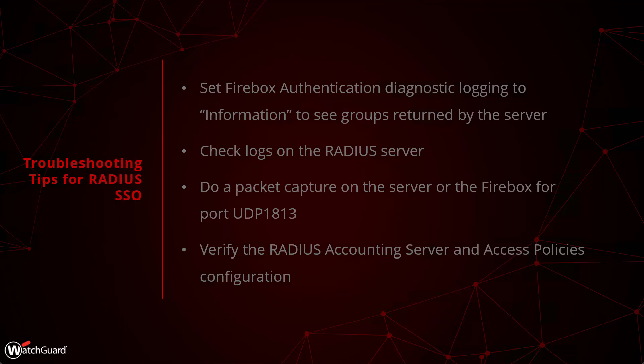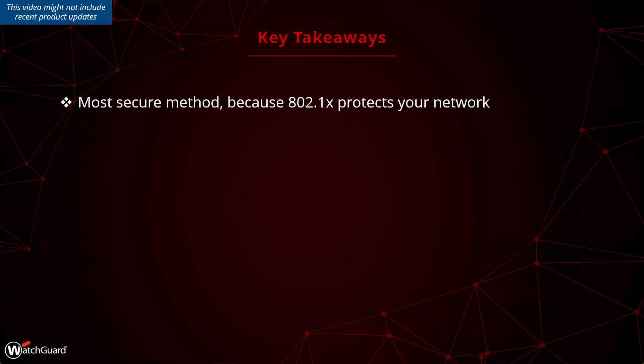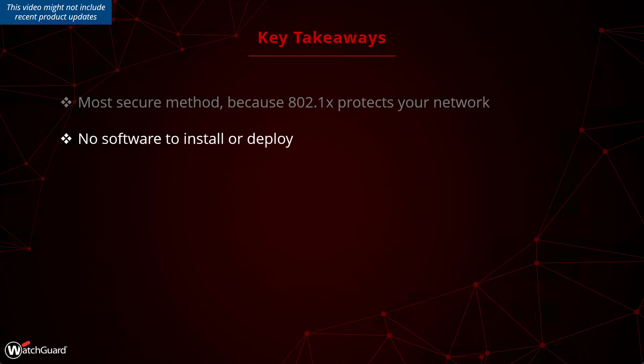Also verify that the access policies you configured have the correct constraints and conditions to allow people to connect. To wrap things up: RADIUS SSO is the most secure method of single sign-on because it uses 802.1x, which implicitly protects your network — giving you protection on the local side of your network before traffic even reaches the firebox. There's no software to deploy, unlike Active Directory SSO where you need to install an agent.